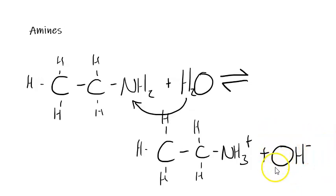Because we now have hydroxide ions in the solution, if we were to put red litmus paper into a solution that contained an amine, then that litmus paper would turn blue.